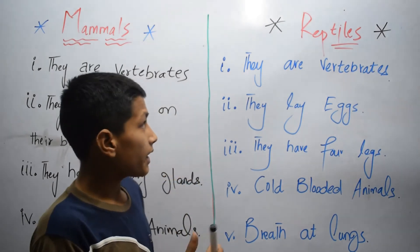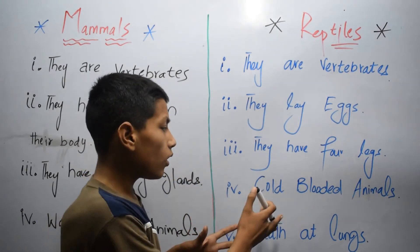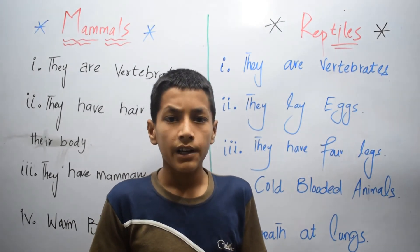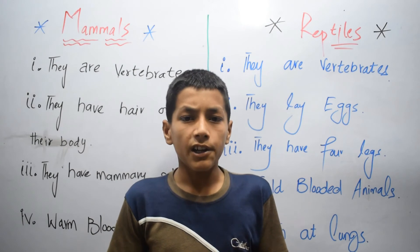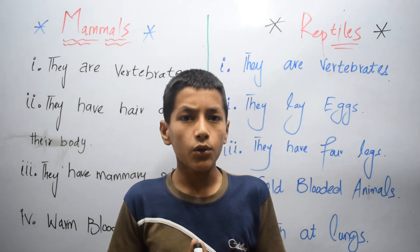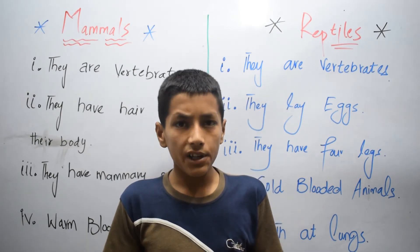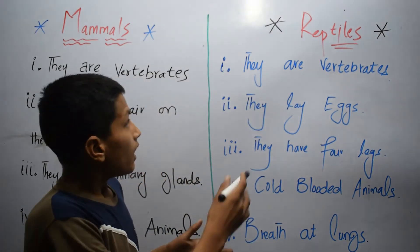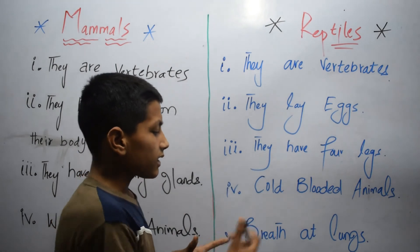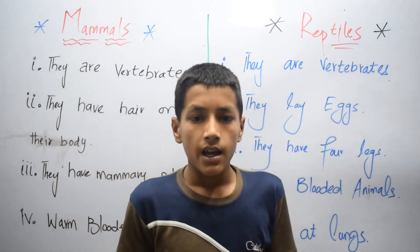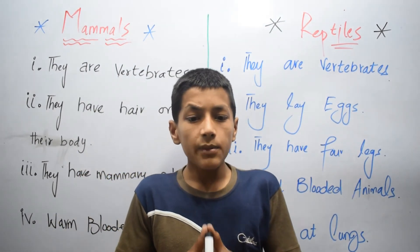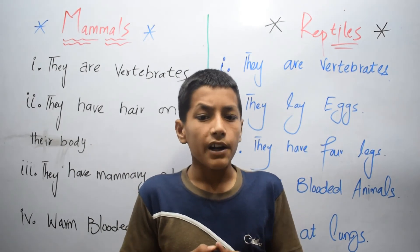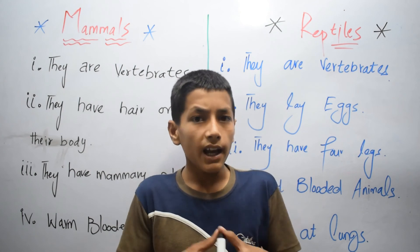Reptiles are cold-blooded animals. Cold-blooded animals mean that reptiles change their internal environment according to the outer surrounding temperature. Reptiles breathe through lungs, meaning gas exchange between the environment and the body takes place through the lungs.